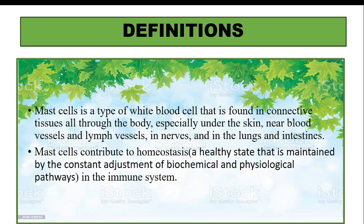Before studying pathophysiology, we need to understand some basics about mast cells, basophils, prostaglandins, and related terms. A mast cell is a type of WBC found in connective tissues throughout the body, especially under the skin, blood vessels, lymph vessels, nerves, lungs, and intestines. Because they are especially present under the skin, mast cells serve as the first line of defense.